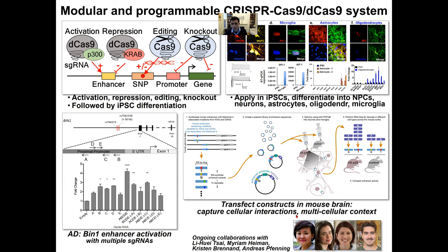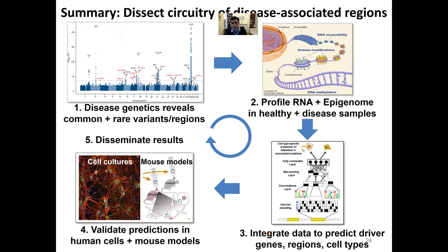We have several collaborations underway with Ligwe Itai, Miriam Heyman, Kristen Brennan, and Andreas Penick. To summarize: we start with human disease genetics to reveal common and rare variants and regions associated with disease. Then we profile RNA and the epigenome systematically in both healthy and disease samples. We integrate all these data computationally to predict driver genes, regions, and cell types. And lastly, we validate our predictions in human cells and in mouse models and we disseminate the results. I'll stop there and I'll be delighted to take any questions. Thank you.